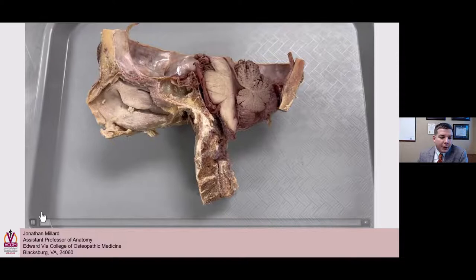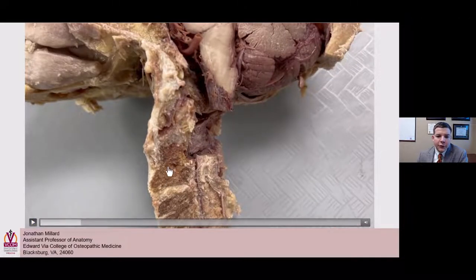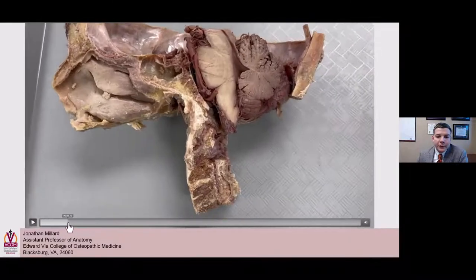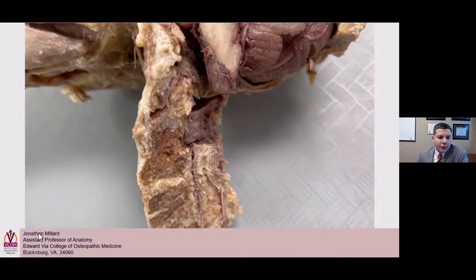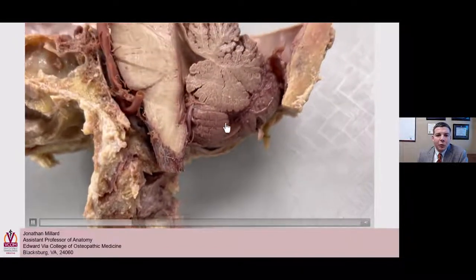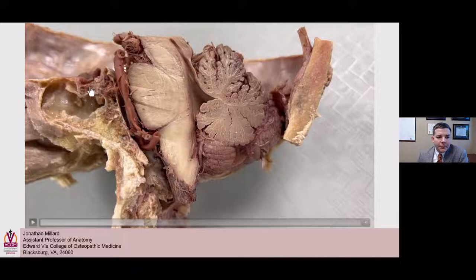This video shows the brainstem and cerebellum. I've sectioned C2 here — here's the dens and the body of C2, the anterior arch on C1, and the spinal cord. You can see a tonsil at the bottom, and the back of the foramen magnum has been removed. Another important feature is the clivus, with the sphenoid sinus and the pituitary gland visible with its infundibulum. Features like empty sella are often associated with Chiari malformation.